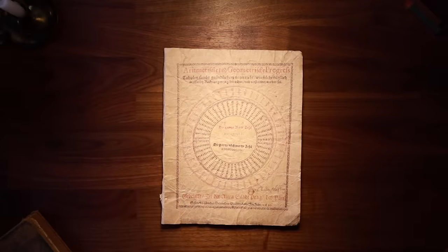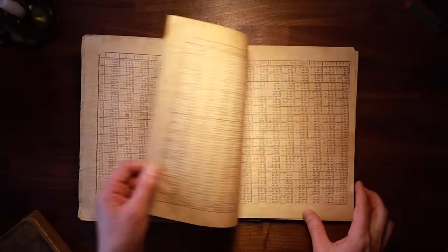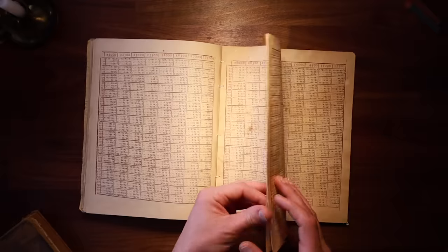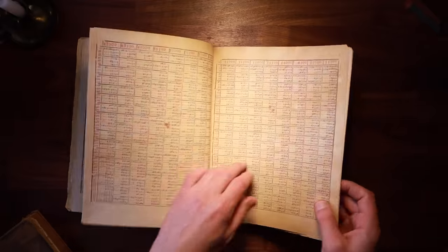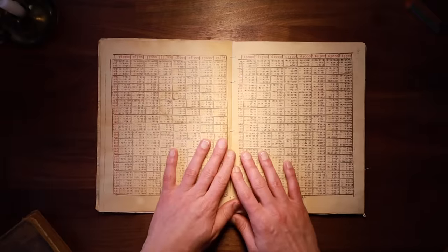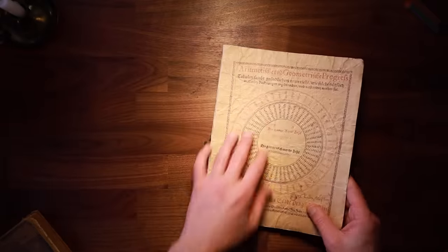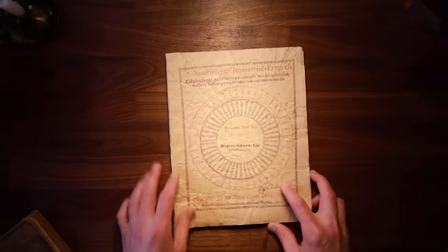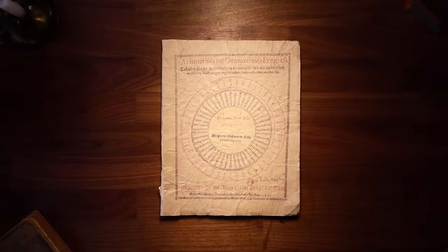This 400-year-old book should have changed mathematics forever. This is the Swiss clockmaker Jost Berge's arithmetic and geometric progression tables. The book contains an ingenious mathematical hack that Berge called red numbers, and the design of a powerful computing device that uses these red numbers hiding on its title page.